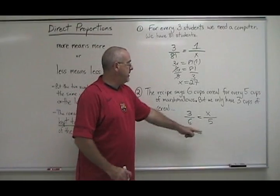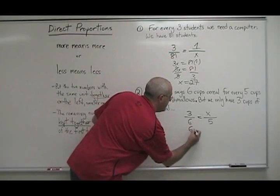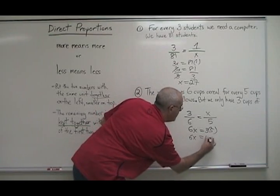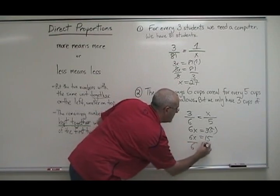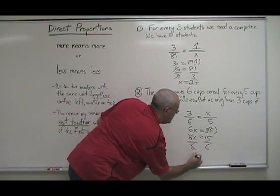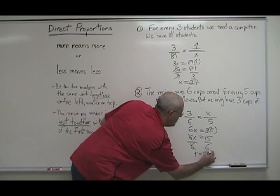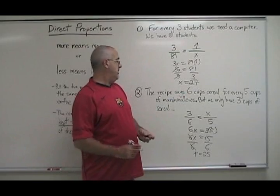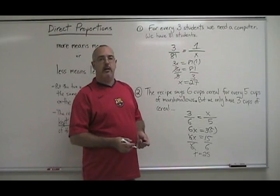If we use the fundamental rule to solve this one, 6x equals 3 times 5. 6x equals 15. Divide both sides by 6. x is equal to 2.5. And that makes sense as well. If we only have three cups of cereal, then we only need two and a half cups of marshmallows.